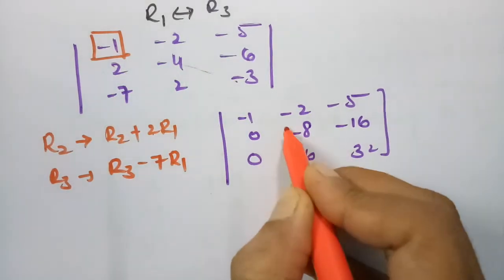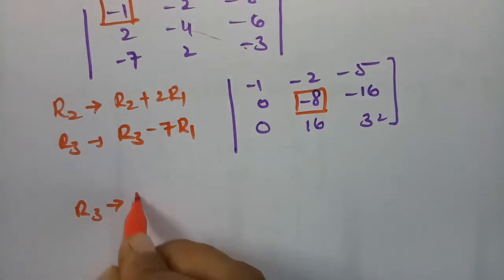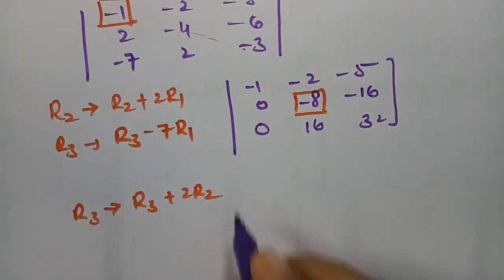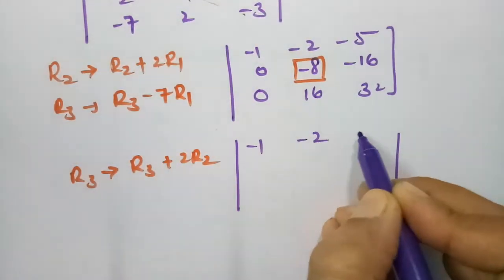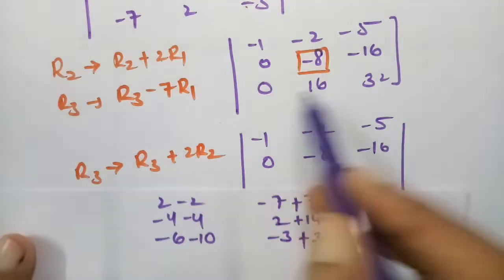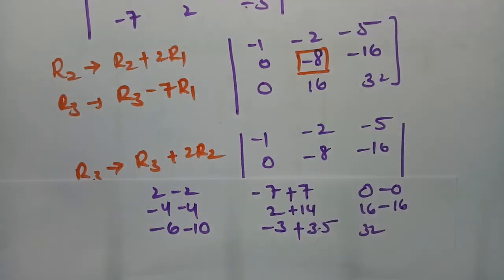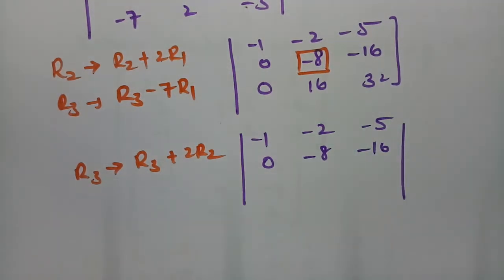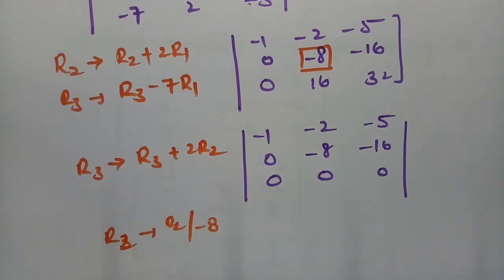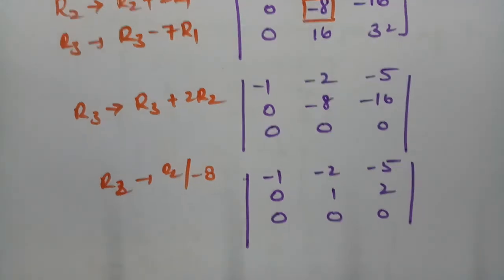Using the second pivot, apply R3 → R3 + 2R2: 0, 16 − 16 = 0, 32 − 32 = 0. Row 3 becomes [0, 0, 0]. Scaling R2 by dividing by −8 gives [0, 1, 2]. The reduced matrix is: [−1, −2, −5], [0, 1, 2], [0, 0, 0].